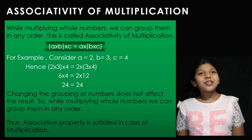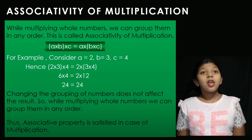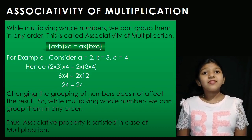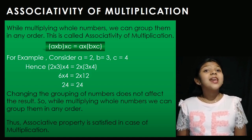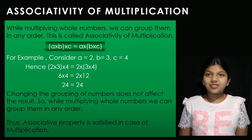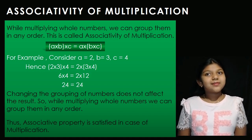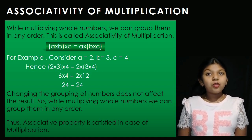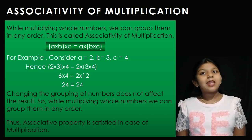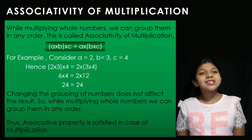Next we are going to see about associativity of multiplication. While multiplying more than 2 whole numbers, we can group them in any order. A into B into C is equal to A into B into C. Either we can group A and B and multiply the result with C, or group B and C and multiply the result with A. Either way, the result is the same.